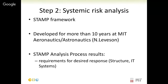The second step, once we have this information flow representation, is a systemic risk analysis using the STAMP method — developed by MIT's aeronautics and astronautics department with Nancy Leveson. It has been used for over ten years particularly in complex production processes, and only in a limited way for supply chains. We are venturing its use into the analysis of cyber risks in supply chains. This process results in requirements for a desired response — the structure, IT systems, and information flows a company would need for better reaction based on the risks to which it is exposed.